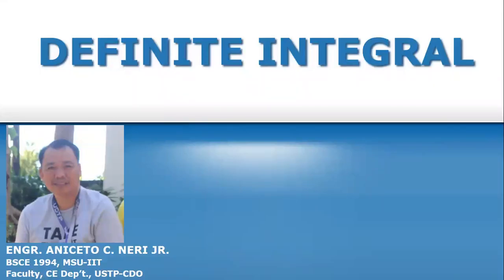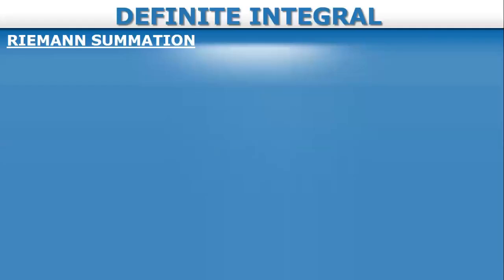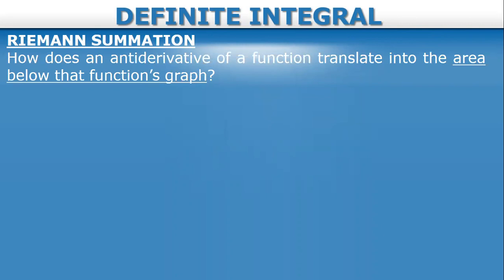In this video I'm going to discuss about definite integral. But before that, let us have a review of the Riemann summation because this will help us better understand about definite integral. So if you are asked: how does an anti-derivative of a function translate into the area below that function's graph?